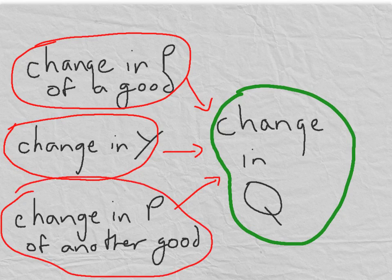So we have three things that can change and each of these three things causes a change in the quantity we demand of the product.